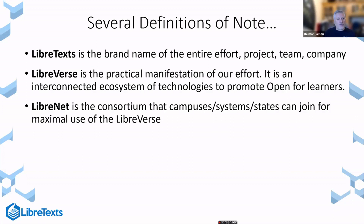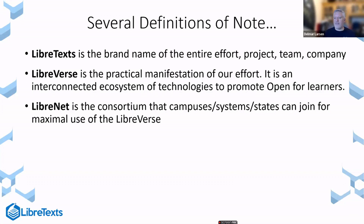The LibreNet is our consortium and sustainability mechanism — that's what campuses can become part of in order to maintain the infrastructure and maximize use of the Libraverse. In contrast to for-profit companies, which try to find the maximum price point in order to operate, as a not-for-profit entity we try to find the lowest price point. We significantly undercut all our competitors, and just because we're significantly cheaper than other alternatives doesn't mean we are poor — in fact, we have significantly greater technology.